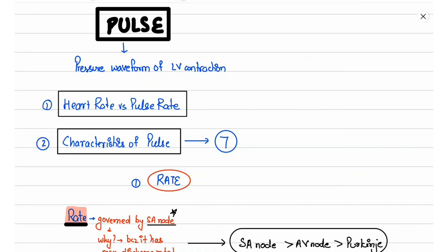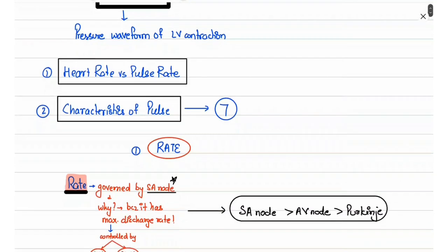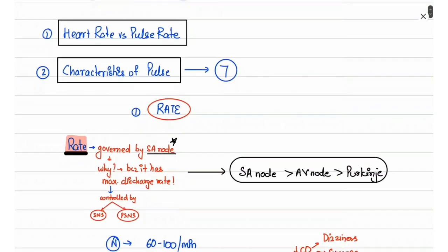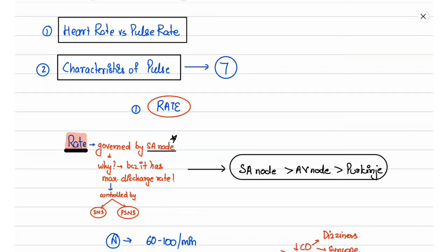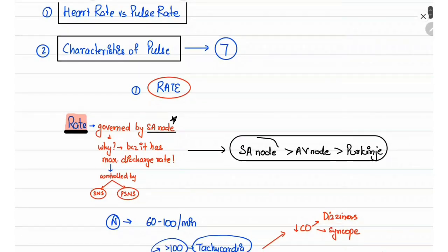There are seven main characteristics of the pulse, among which the rate is the most important. The rate of the pulse, in simple terms, is the number of times you feel the pulse per minute. It is mainly governed by the SA node present in the heart. There are mainly three electrical nodes within the heart: the SA node, AV node, and the Purkinje fibers. Among them, the SA node has the maximum rate of discharge, so it is the one governing the rate.